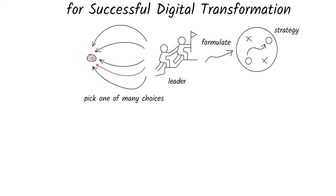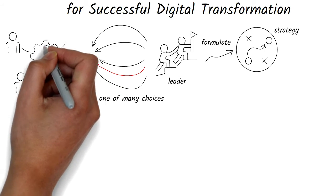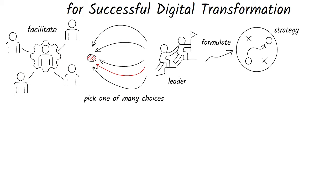In a very simplified way, strategy is about picking one option among many available choices. One role of an architect is to lay out these choices and facilitate conversations to help leaders pick one. In reality, you could pick a few, but let's keep it simple.